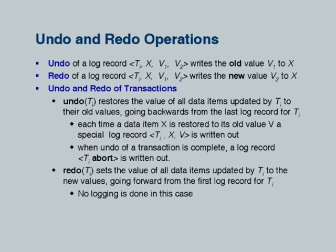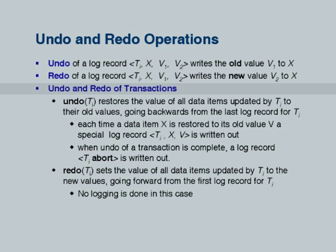Undo of a log record writes the old value back; redo writes the new value — that is straightforward. Undo of a transaction has to undo all updates made by that transaction in reverse order, starting from the last one and going backwards. If you go forward and it updated an item from 10 to 20 to 30, undoing the first update goes from 30 to 10, then undoing the next goes from 10 to 20 — whereas the original value should have been 10. So undo must always go backwards in time.